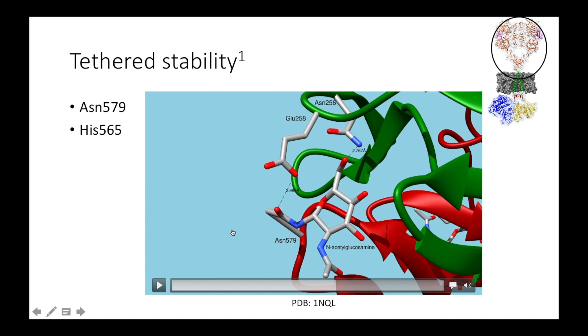Asparagine 579 here is covalently bonded to glucosamine, and this glycosylation has been found experimentally to be crucial for stabilizing the tethered conformation. Glucosamine can form a hydrogen bond with the amide side chain of asparagine 256 in domain 2.